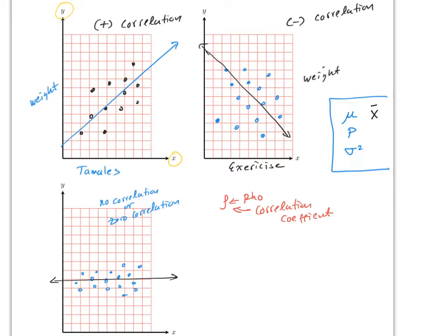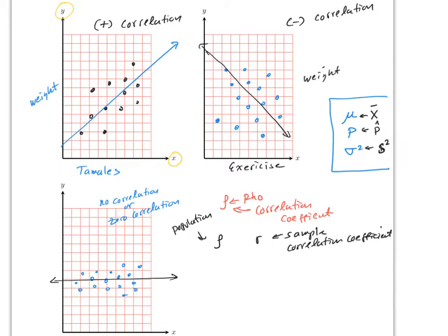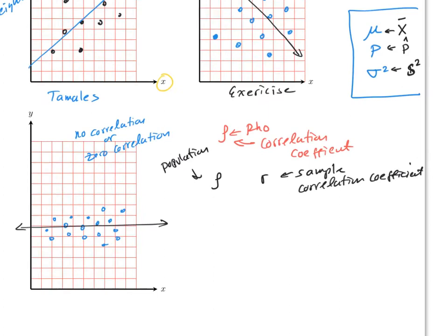You usually don't find the parameter itself — you find an approximation. Just as x-bar approximates mu and p-hat approximates p, the sample correlation coefficient r is the approximation for rho.